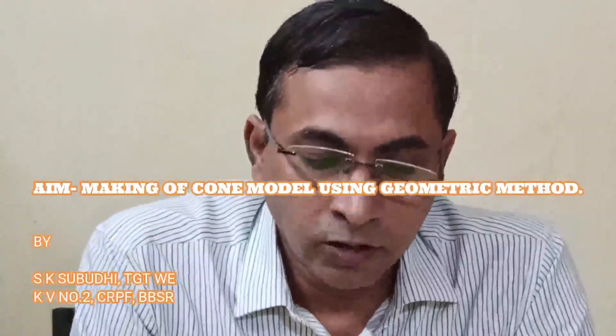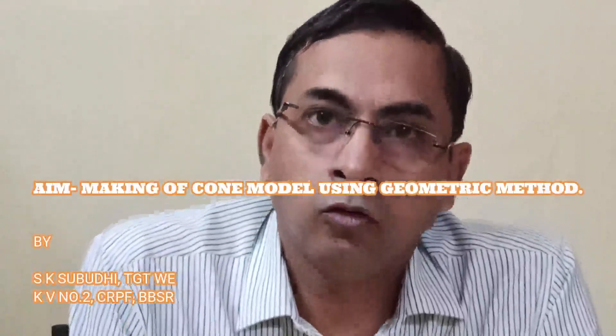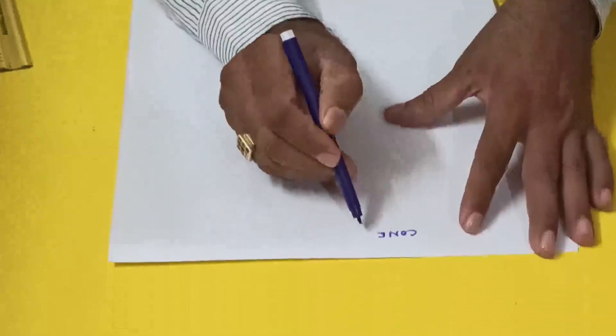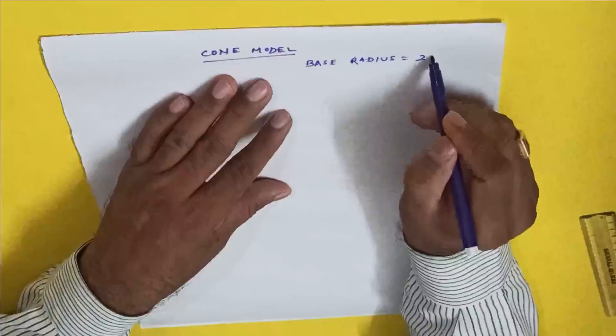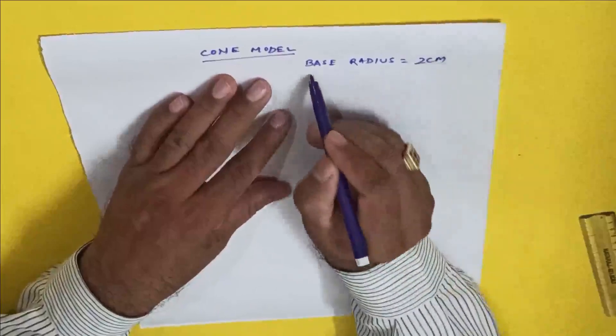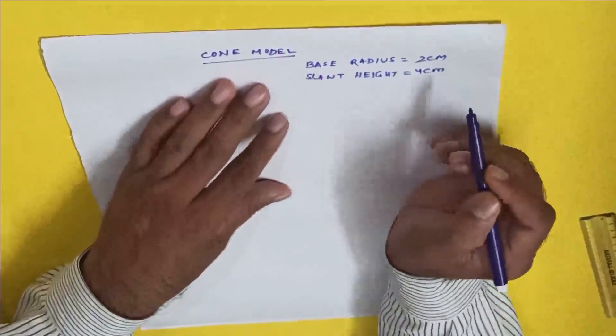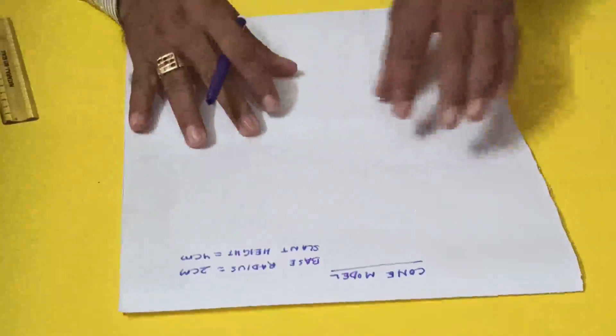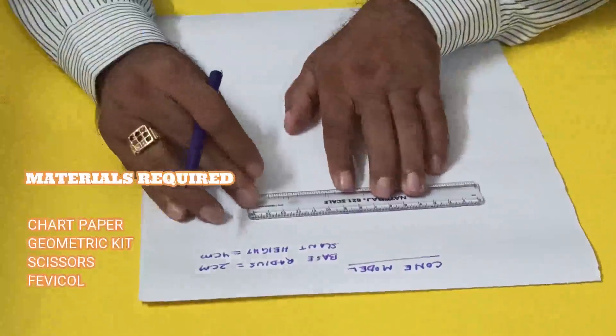Good morning students, today we'll discuss how to make a cone model. I have taken base equal to 2 centimeters and slant height equal to 4 centimeters. Now let's see how to make the net diagram. The radius is 4 centimeters.